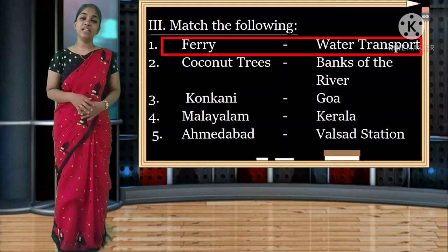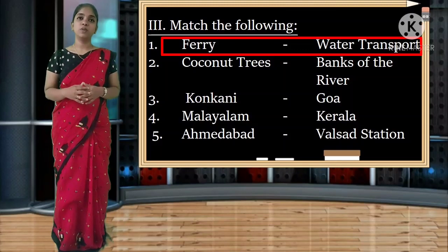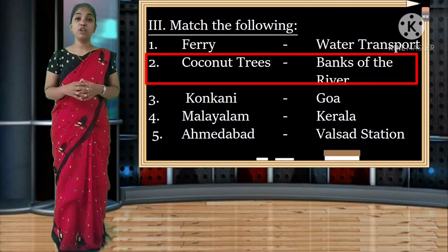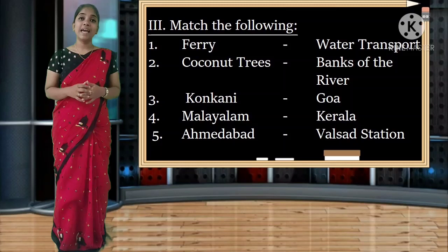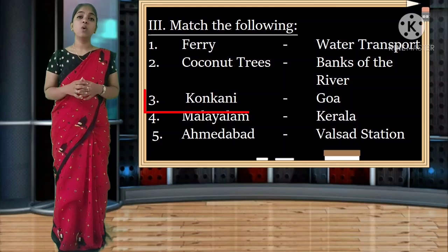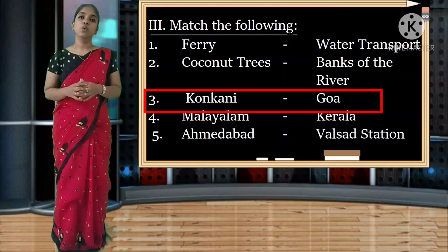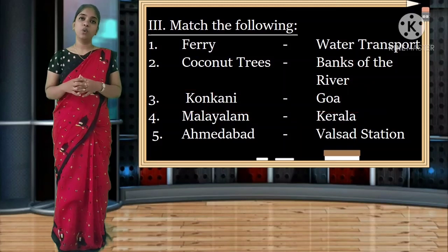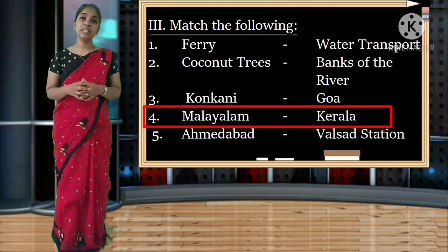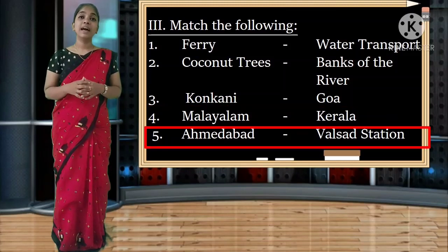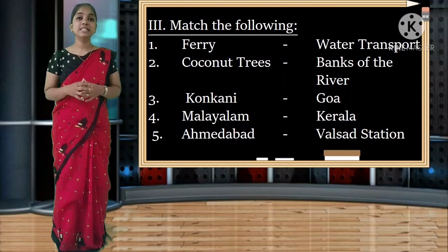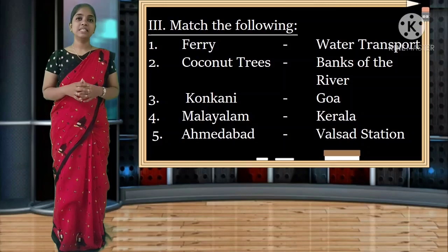Match the following. First: ferry - water transport. Second: coconut trees - banks of the river. Third: Konkani - it is a language spoken in Goa. Fourth: Malayalam - it is spoken in Kerala. Fifth: Ahmedabad - it is from Valsad station. Next lesson we are going to revise: lesson 9 - Changing Families and lesson 12 - Changing Times.